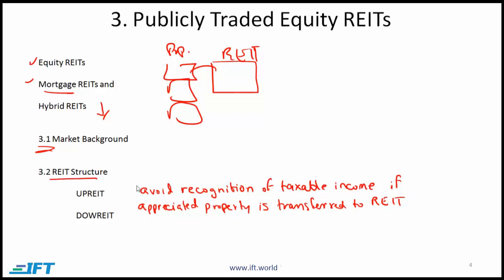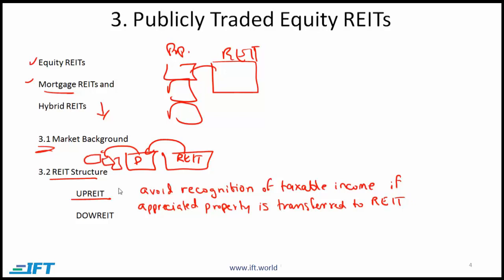What the curriculum points out is that many REITs are structured as up REITs, which refers to umbrella partnership REITs. The high-level idea is that we have a REIT entity and a partnership. The REIT owns the partnership and the partnership owns the properties. This structure gives a tax advantage by helping avoid the recognition of taxable income when appreciated properties are transferred to the REIT. There are no examples, so from a testability perspective, this is very low priority.